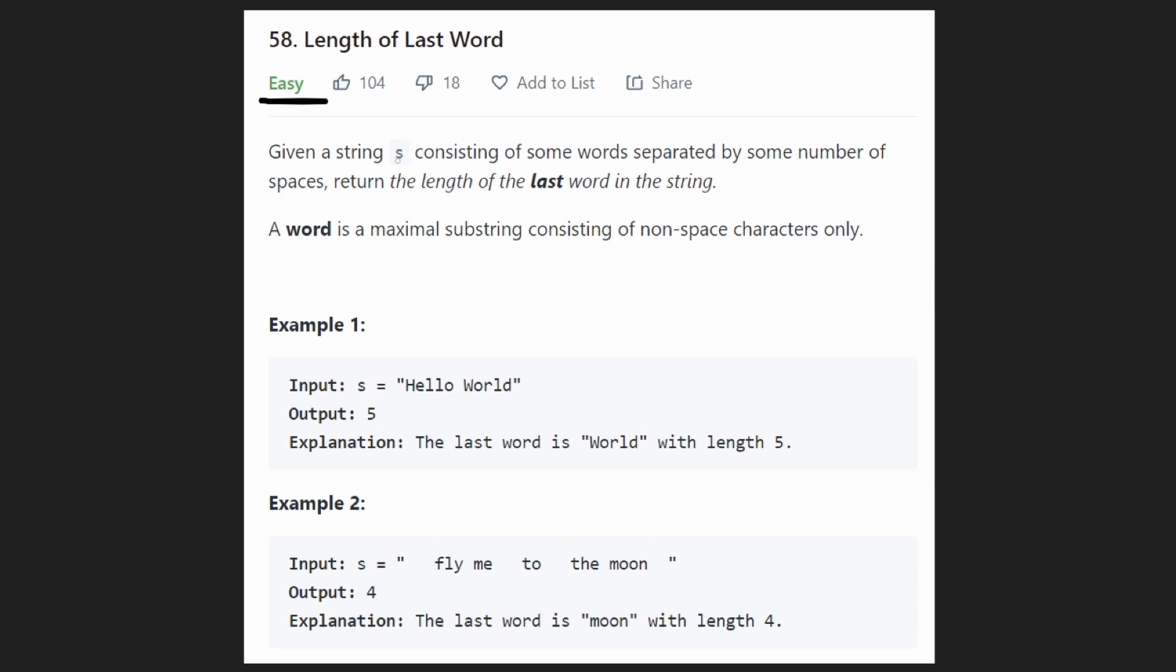We are given a string S consisting of some words and these words are separated by some spaces. Among all of these words in the input string, we just want to return what is the length of the last word that occurs in the string. And we're guaranteed that there's going to be at least one word inside of the string.